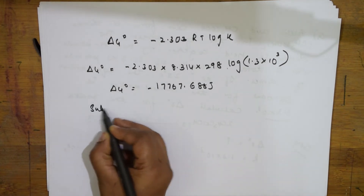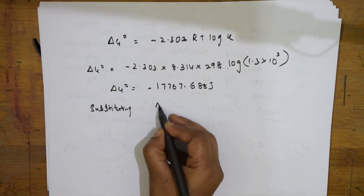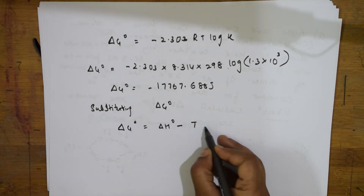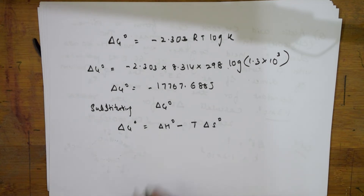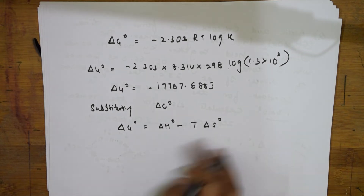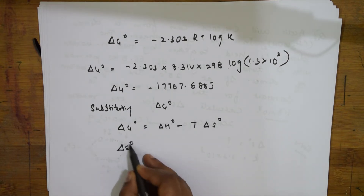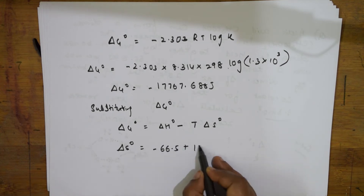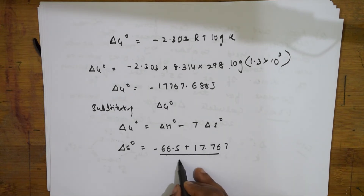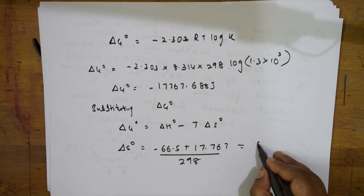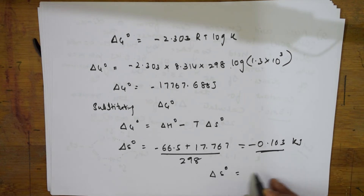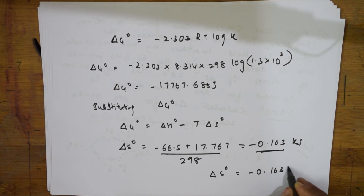Now, substituting the delta G naught value into the formula: ΔG° = ΔH° − TΔS°. The ΔH° value is −66.5 kJ per mole. So: ΔS° = (−ΔG° − ΔH°) / T = (−66.5 + 17.767) / 298. When I solve this, I get an answer of −0.163 kJ, so the standard entropy change is −163 J per mol per K.